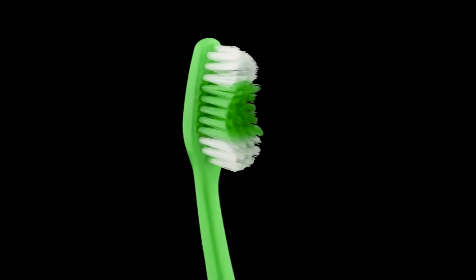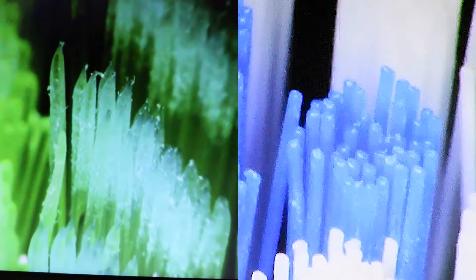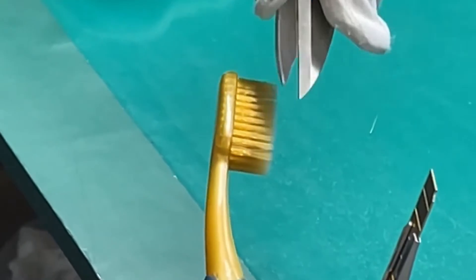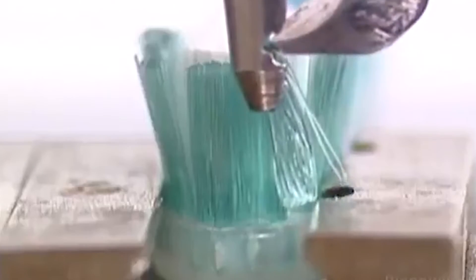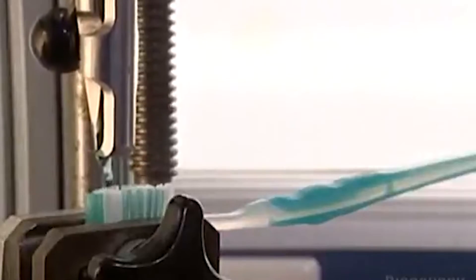Quality control is a critical aspect of toothbrush manufacturing. Various tests are conducted to ensure that the toothbrushes meet the specified standards. This includes checking the dimensions, verifying the integrity of the bristle attachment, and inspecting the overall finish of the product. Any toothbrush that does not meet the quality criteria is discarded or undergoes necessary adjustments.